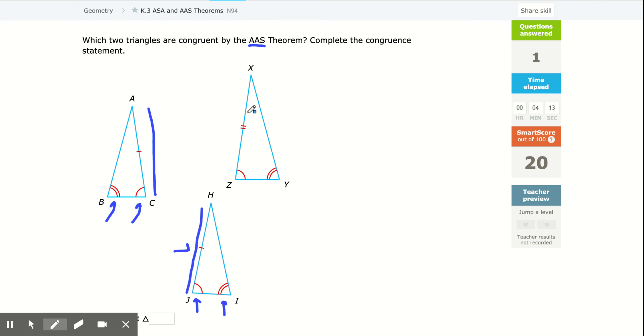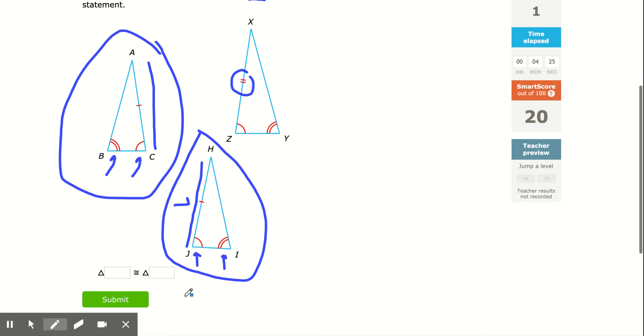Now this is also angle, angle, side, but remember that two tick marks doesn't match up with a single tick mark, meaning it's a different length than the single tick mark. So it's this triangle and this triangle because it has the same markings.